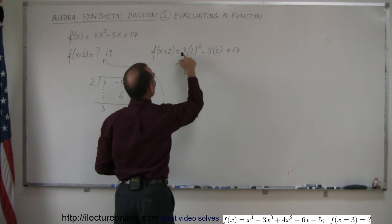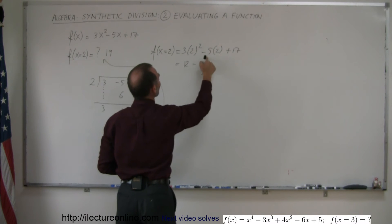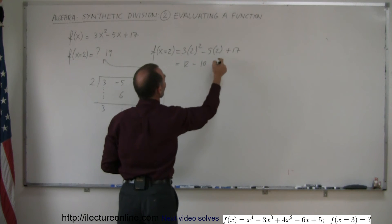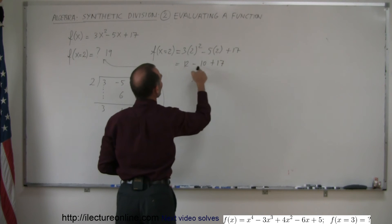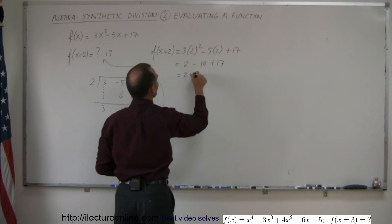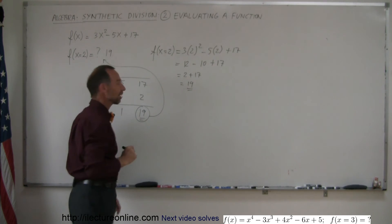And so this equals 2² = 4, 4 times 3 is 12, minus 5 times 2 is 10, plus 17. So 12 minus 10 is 2 plus 17, which equals 19. And notice, you get the exact same value.